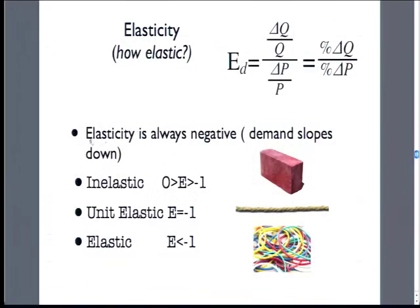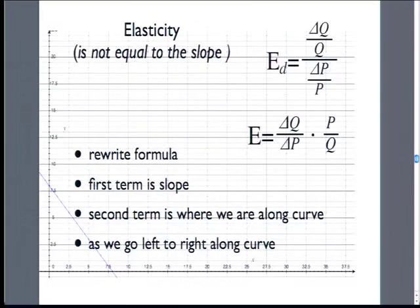Price elasticity of demand is always negative. Between 0 and negative 1, we say it's inelastic — not very responsive to price. If it's exactly negative 1, then a 1% change in price leads to a 1% change in quantity. If it's elastic — greater than negative 1 in magnitude — a 1% change in price will lead to more than a 1% change in quantity. Remember, it's not equal to the slope. It matters where you are on the slope because it's normalized by these quantities. The first term is the slope; the second term normalizes by where you are on the slope. As we go from left to right along the curve, the elasticity changes because those ratios change.